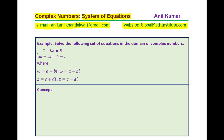The question here is: solve the following set of equations in the domain of complex numbers. Equation one is: conjugate of Z minus i·Omega equals 5. Equation two is: conjugate of Omega plus i·Z equals 4 plus i. You need to find the values of Z and Omega.